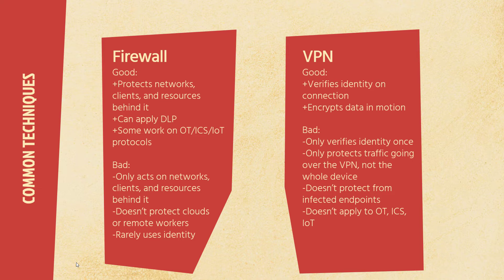VPN is a normal companion to firewall because it verifies the identity on connection, encrypts data in motion, and gives the endpoint client some of the protections of being behind the firewall for traffic going over the VPN. But it doesn't protect the whole device — just the traffic going over the VPN. Everything else is still an open WAN edge. It verifies identity once when you log on, and it doesn't protect from infected endpoints logging on unless you've got some kind of posture control.